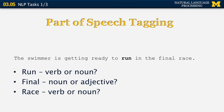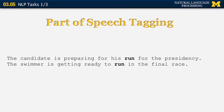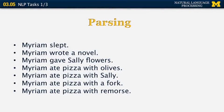Part of speech tagging is about using rules like these and some statistics to understand the parts of speech of individual words in a sentence. If we had 'his' before 'run,' we would label 'run' as a noun, and if we have 'to' before 'run,' we would label it as a verb. The next task in natural language processing is parsing, which takes a sentence as input and produces a syntactic representation for it.